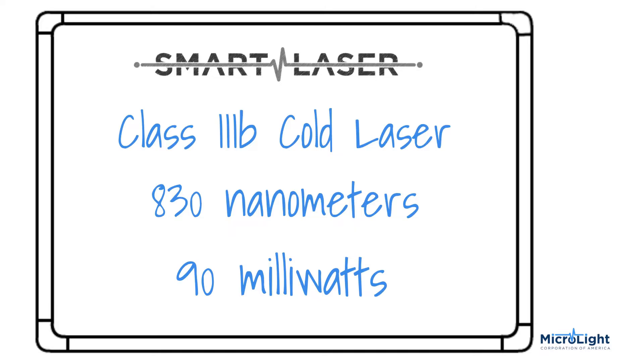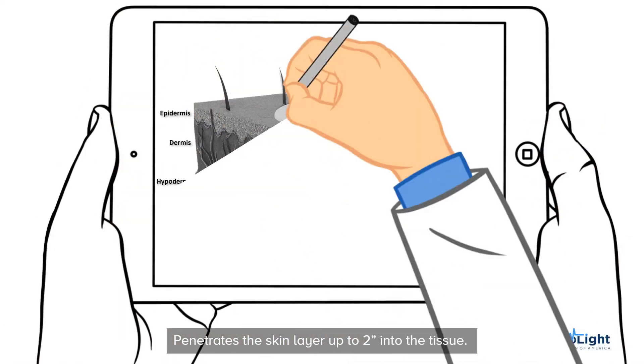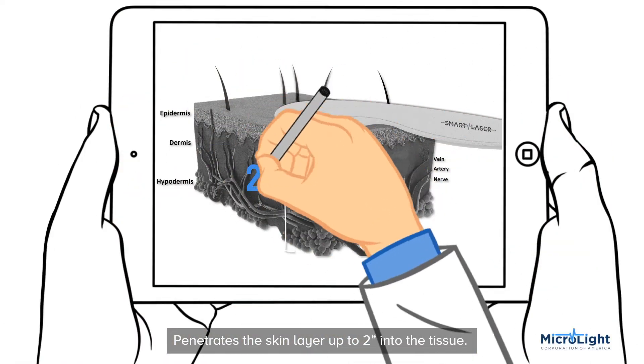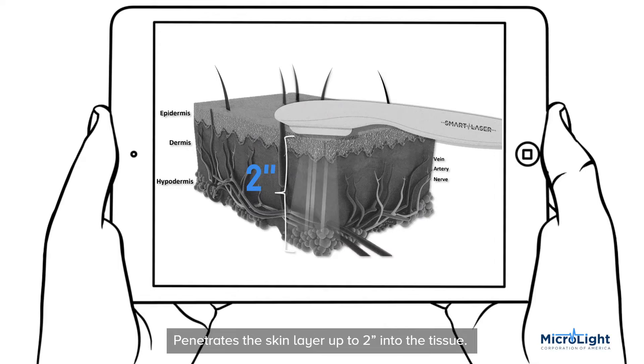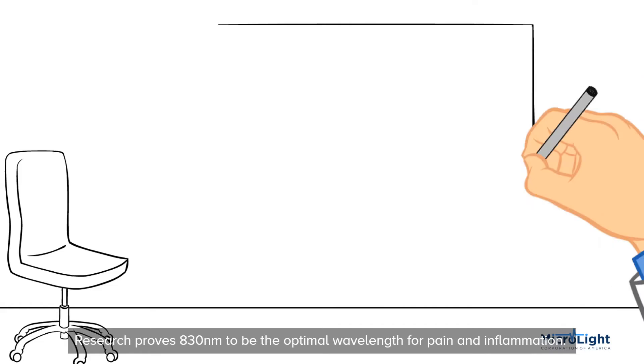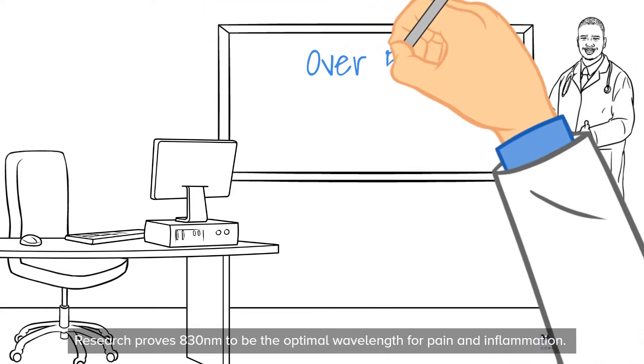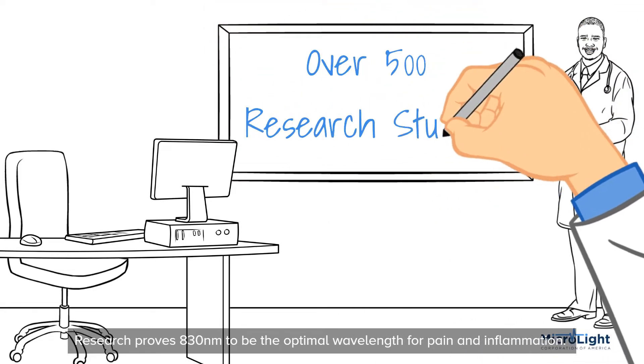The device positively affects pain, inflammation, and tissue repair. Research has proven that the 830 nanometer range is the optimal wavelength to treat pain and inflammation.